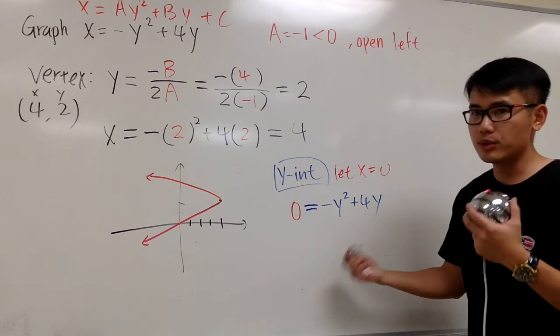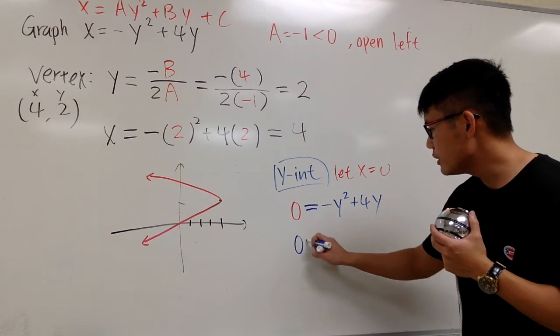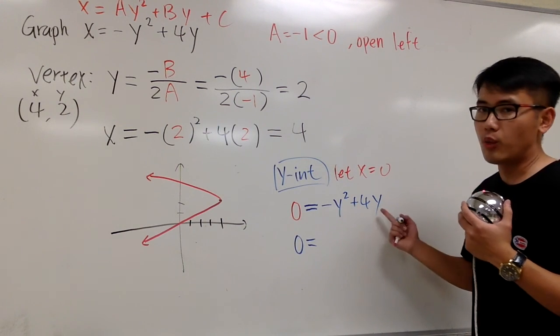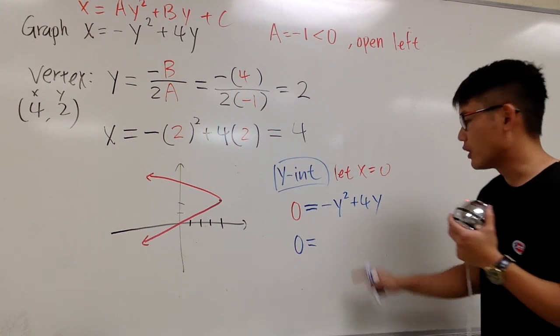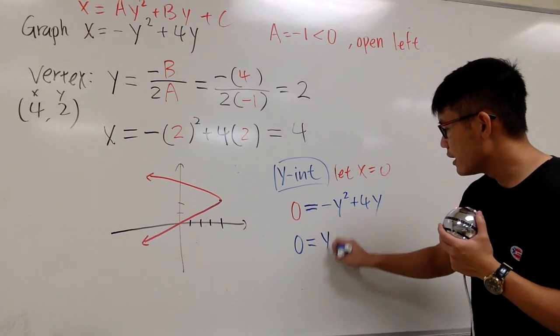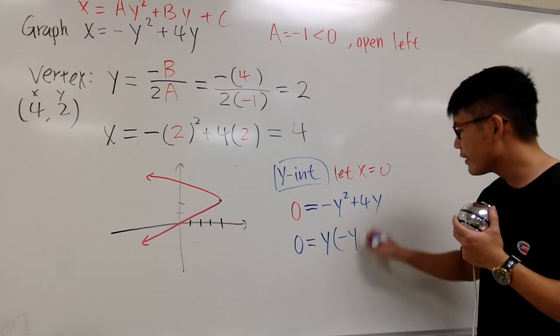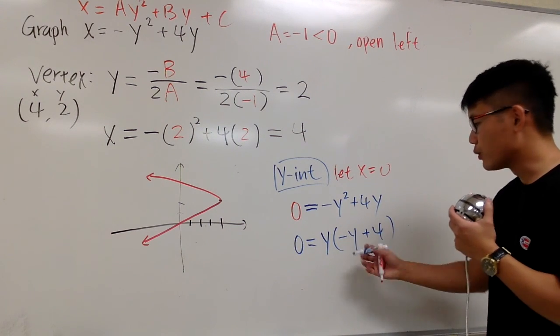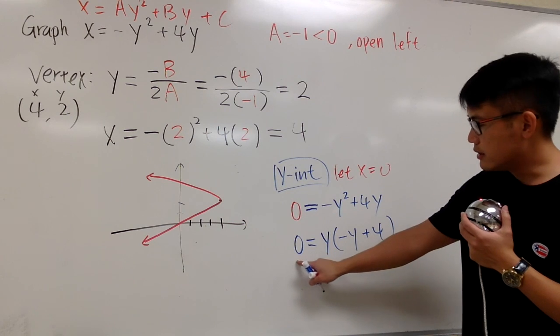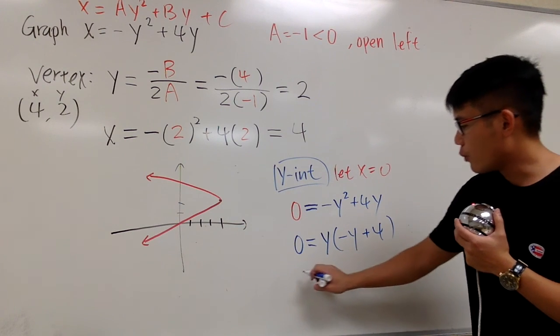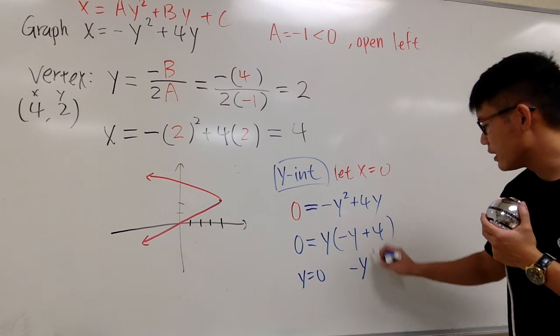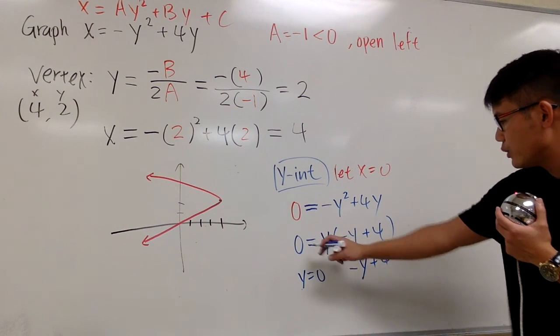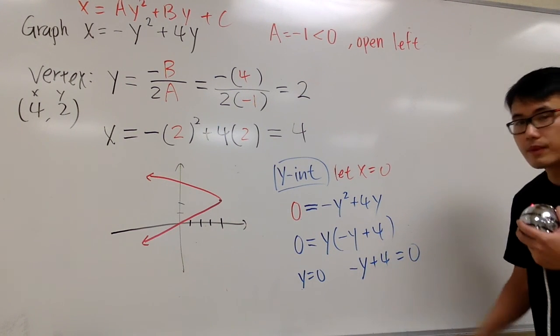I'm just going to factor this out and solve for y. So this is going to be 0 equals, let me just factor out y. So I'm going to factor out y, and then we will have negative y plus 4. And this equals 0. And we have y equals 0, and the other one is negative y plus 4 equals 0.